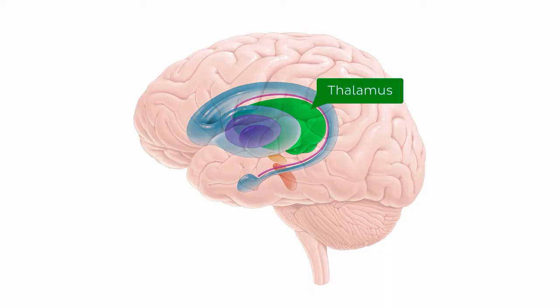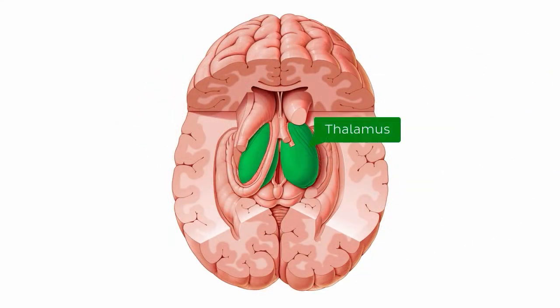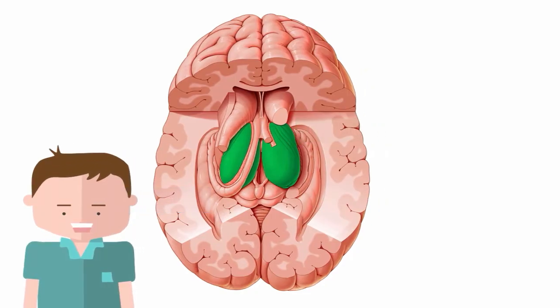For instance, if we wanted to look at the thalamus — the central hub of the brain — here we can see the thalamus, which is that oval green structure in the centre. We have to dissect part of the cortex to get a better view. What might that look like if we removed some of the cerebral cortex, and what structures would we expect to find around it? Let's see what lies beneath as we explore an illustrative dissection of the thalamus.